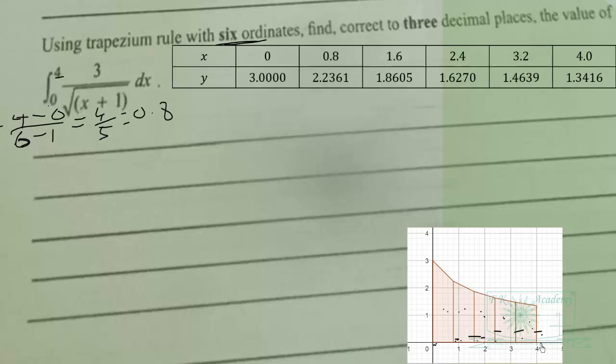Our table will look like this. We plug in the x values into the function. So plug in 0, and you get 3 over square root of 1, which is 3 over 1, giving you 3.